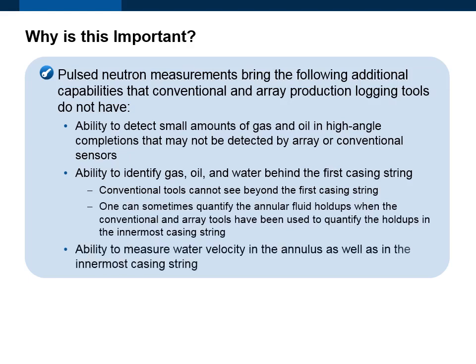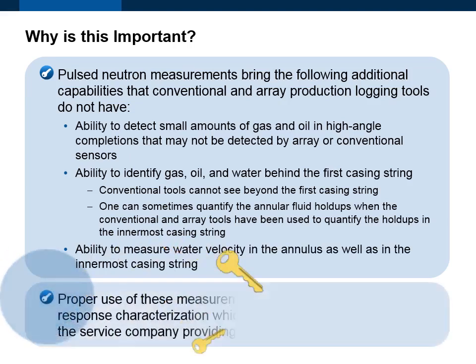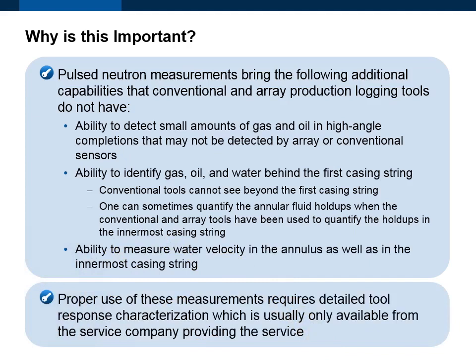Additional capabilities include the ability to measure water velocity in the annulus as well as in the innermost casing string. Proper use of these measurements requires detailed tool response characterization, which is usually only available from the service company providing the service. Understanding how these measurements are made and how to interpret them can help you decide when you need to use production logging tools in wells with complex completions.